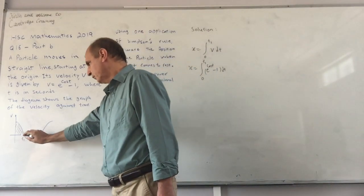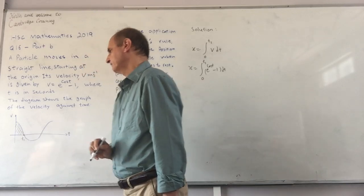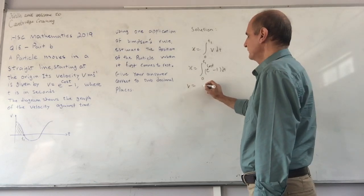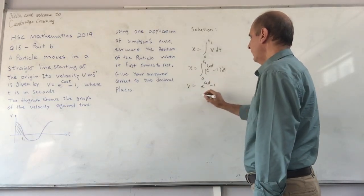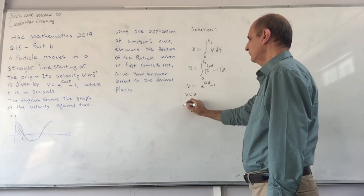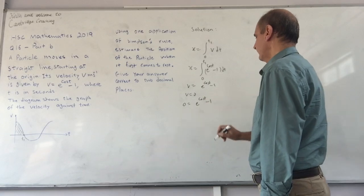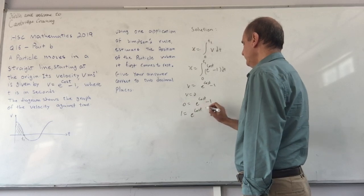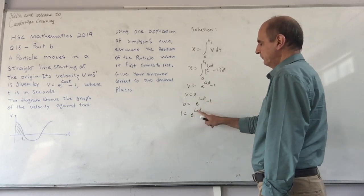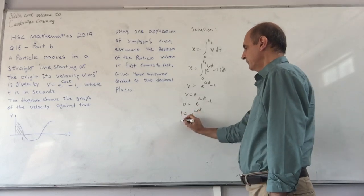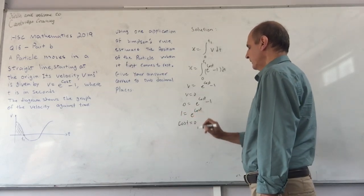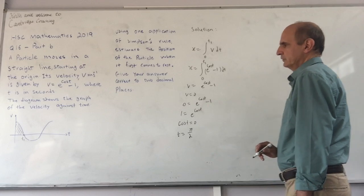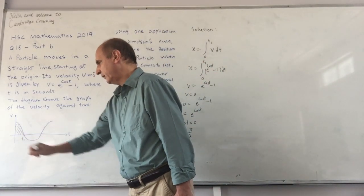First of all we need to know what this t1 is. Using the expression for velocity, which is v equals e to the cos t minus 1, I let velocity be 0 and try to find the time. So that means I take 1 to the other side: 1 equals e to the cos t. Since any number to the power of 0 equals 1, cos t must be 0. And from here we know that t must be π on 2, so this time t1 is π on 2.